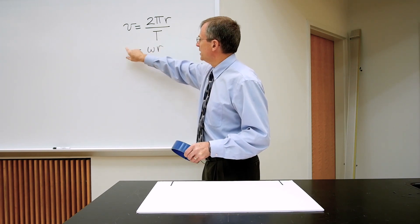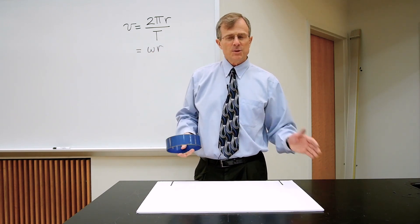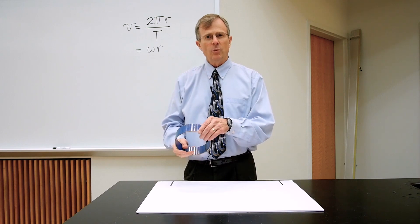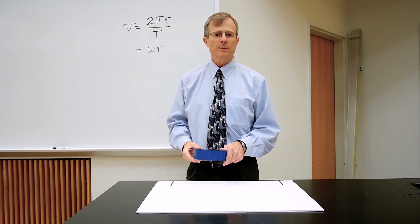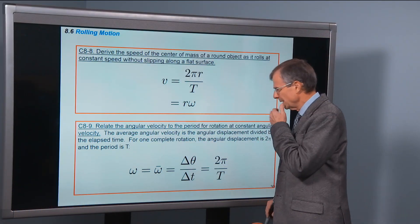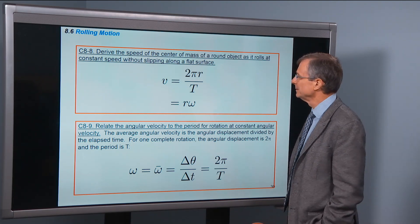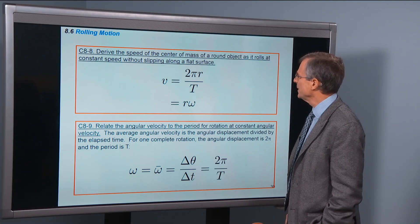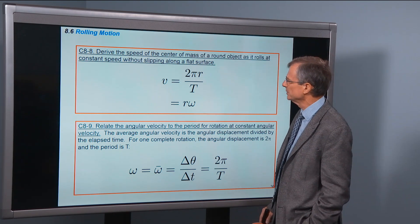And so this equation V equals omega R gives the speed of a wheel or any circular object that rolls without slipping. Here's a capture of this result as a concept: Derive the speed of the center of mass of a round object as it rolls at constant speed without slipping along a flat surface.